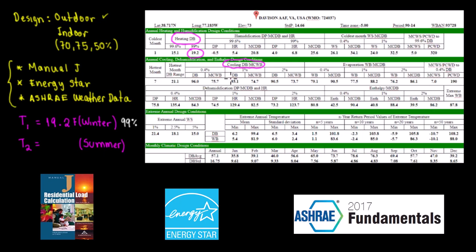So we have our two temperatures — Temperature 1 and Temperature 2. Temperature 2 for summer is 93.1°F at the 1% percentile. If you want to be more conservative you can choose 0.4%, where the temperature is higher at 96°F.